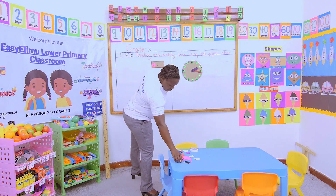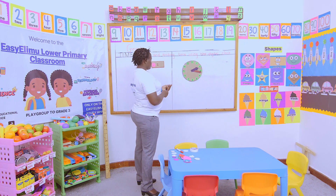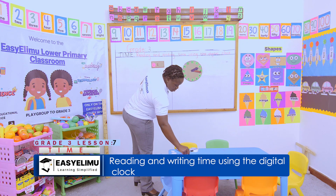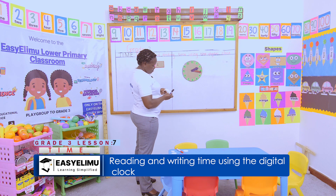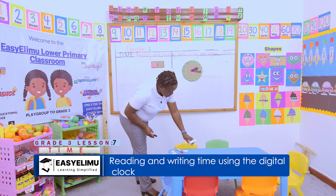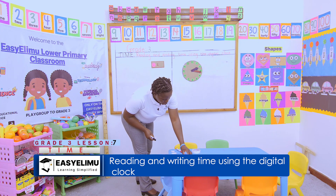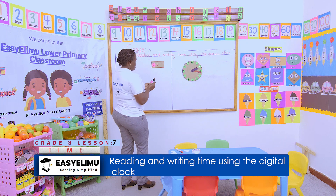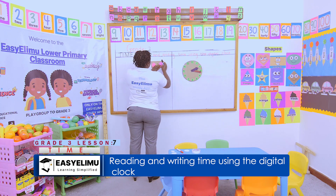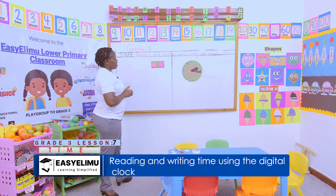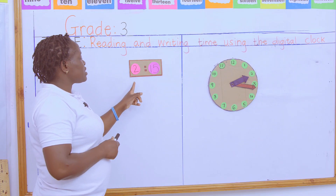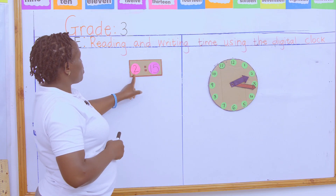The other one will be — quarter is represented by 15. So my time will appear like that on the digital clock face. Quarter past two.